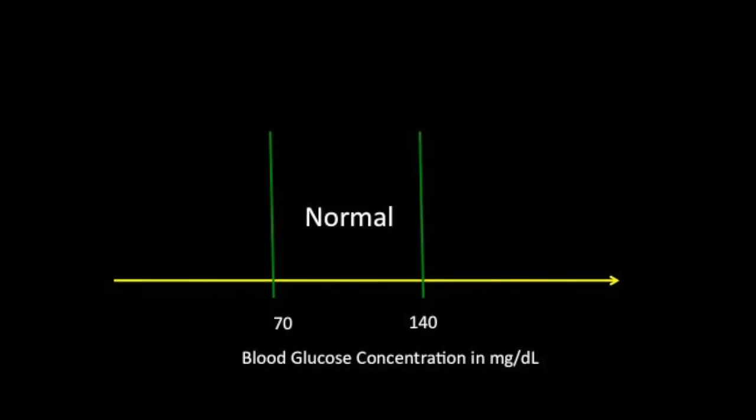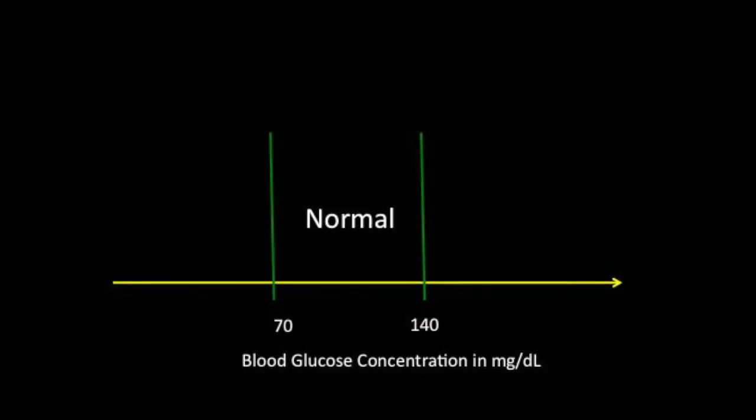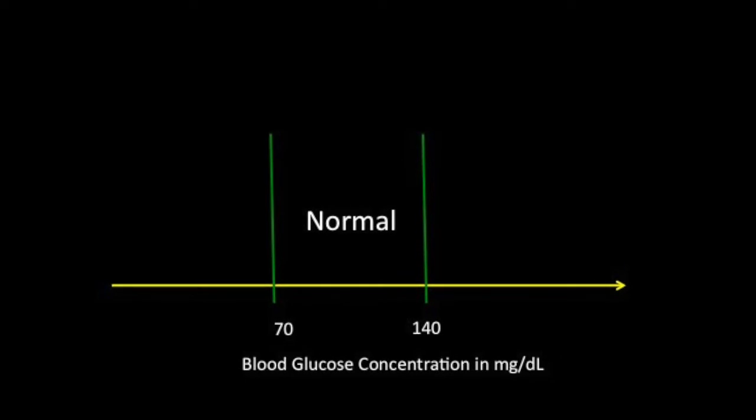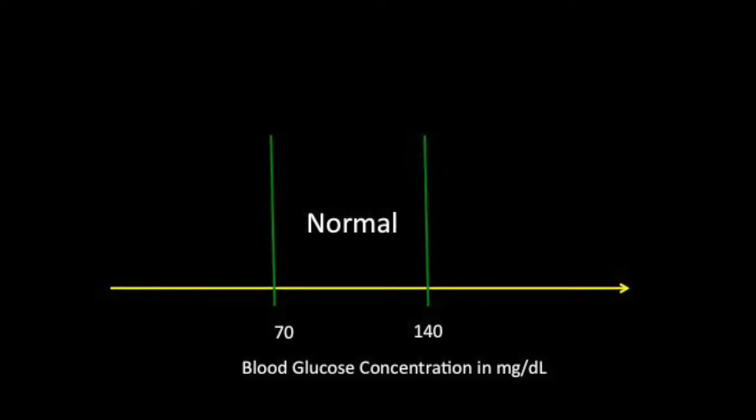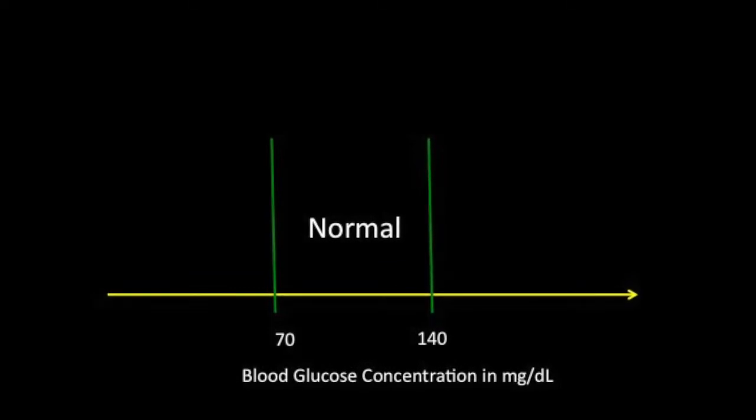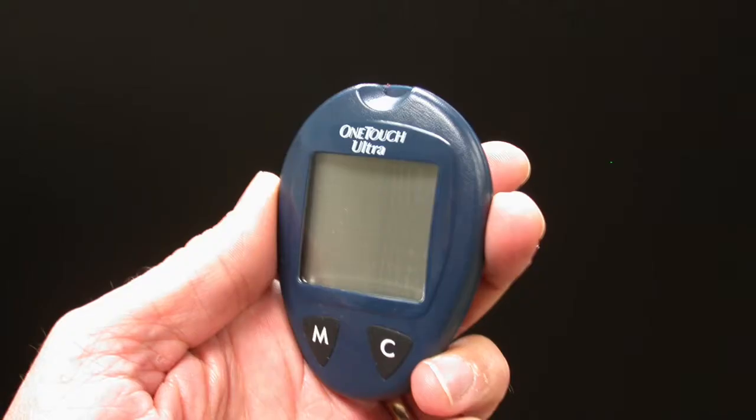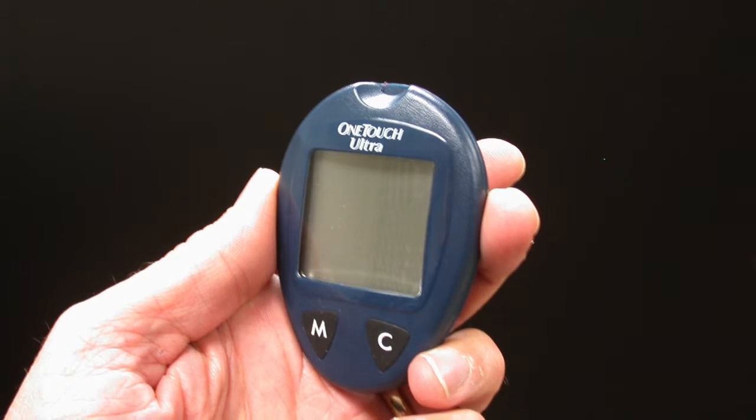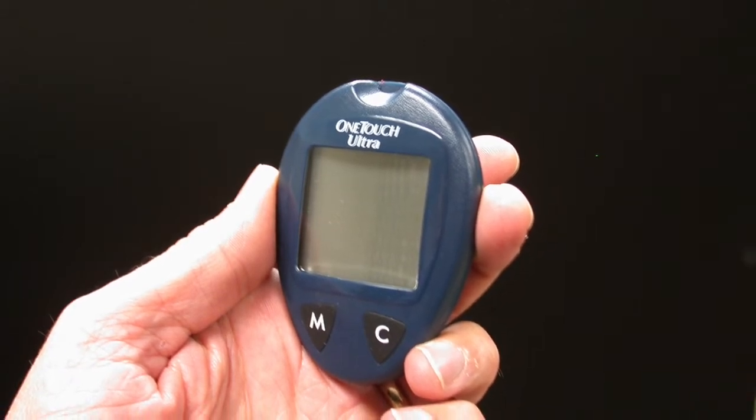Consider for a moment the measurement of glucose in blood. One's blood sugar level is very important to a person who has diabetes. So diabetic individuals usually have their own devices for monitoring it. Here is an electrochemical device that measures glucose directly from a drop of blood.